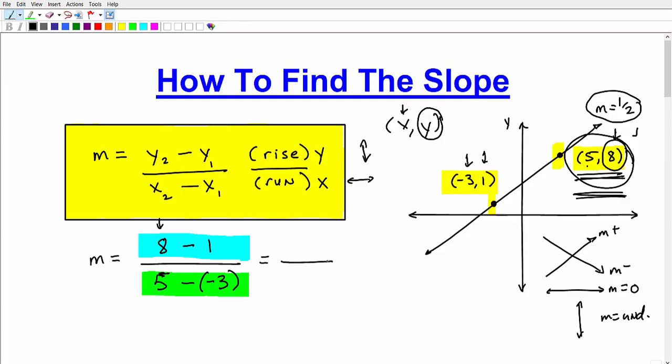Another mistake students do is very common, is they'll put the x's in the numerator and the y's in the denominator. So just remember, y over x, rise over run. So now this is a good little pop quiz for you. Can you actually calculate this real quick? You might want to pause the video and calculate this, and let's just test your ability to work with positive and negative numbers.